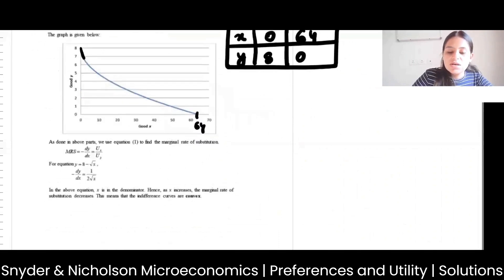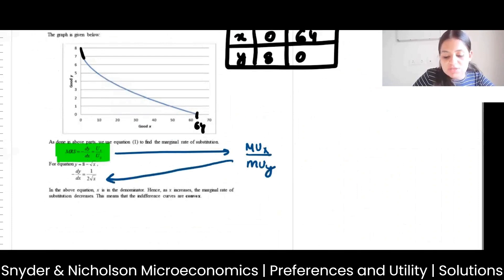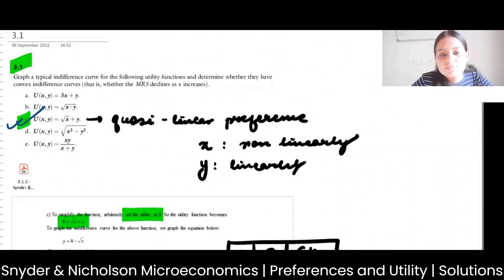And then all other curves will be like this. It will be an indifference map. Now the next question that arises is what is MRS? So as I told you, MRS is MUx by MUy, and that is 1 by 2 root x. We know that as x is increasing, MRS is decreasing, so my ICs are convex. That's this part, part C. I hope that is clear.